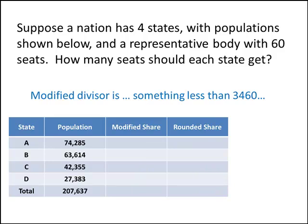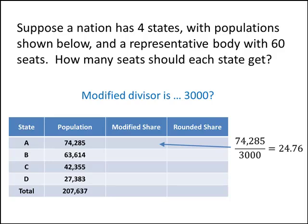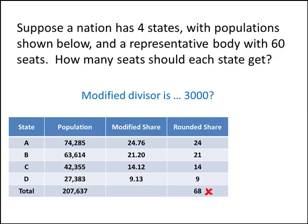At this point it becomes a guessing game. We want to find some number less than 3460 so that when we find our shares and round them down, they add up to the 60 seats we're looking for. Let's try 3000. For state A, the modified share is the population of state A divided by 3000, giving 24.76, and the rounded share is 24. Doing the same for B, C, and D gives a total of 68 seats — way too many. So 3000 is too small; we need a divisor between 3000 and 3460.